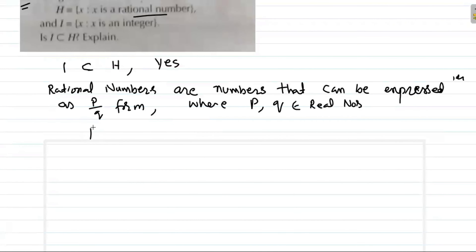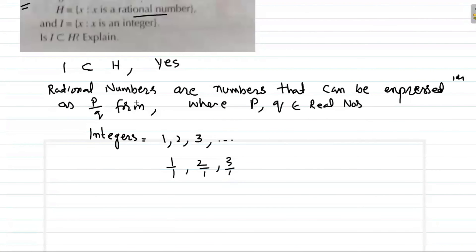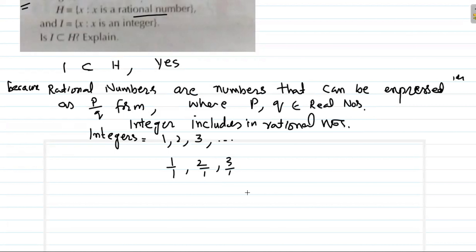Rational numbers are numbers that can be expressed as P/Q where P and Q belong to integers. Integers like 1, 2, 3 can be written as 1/1, 2/1, 3/1 — all in P/Q form. Therefore, integers are included in rational numbers, so I is a subset of H.